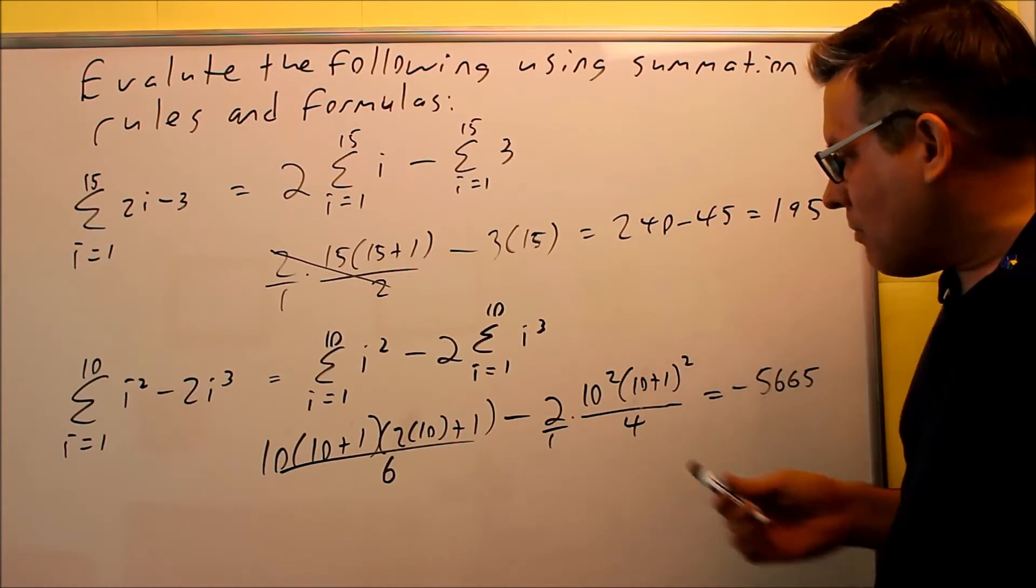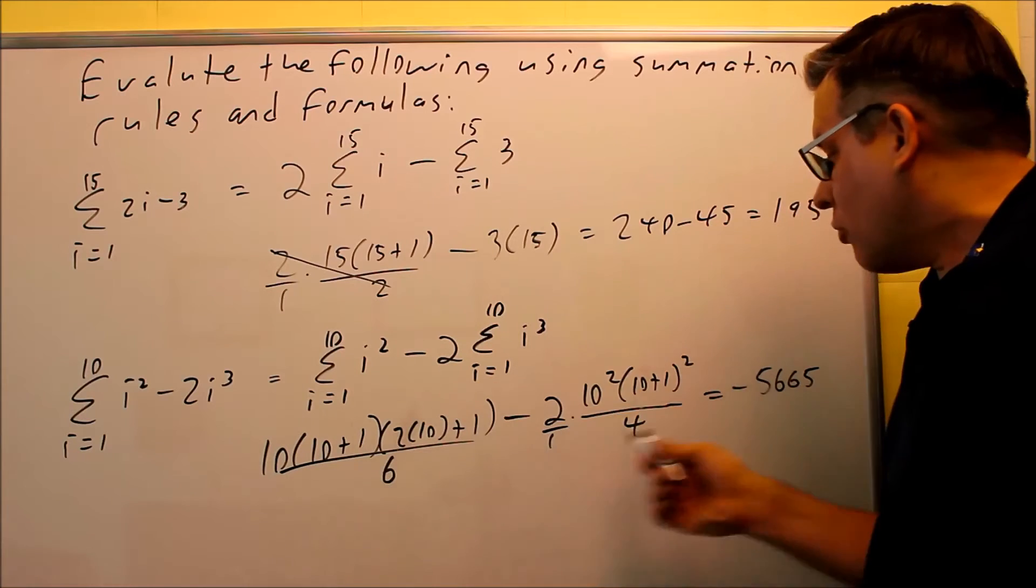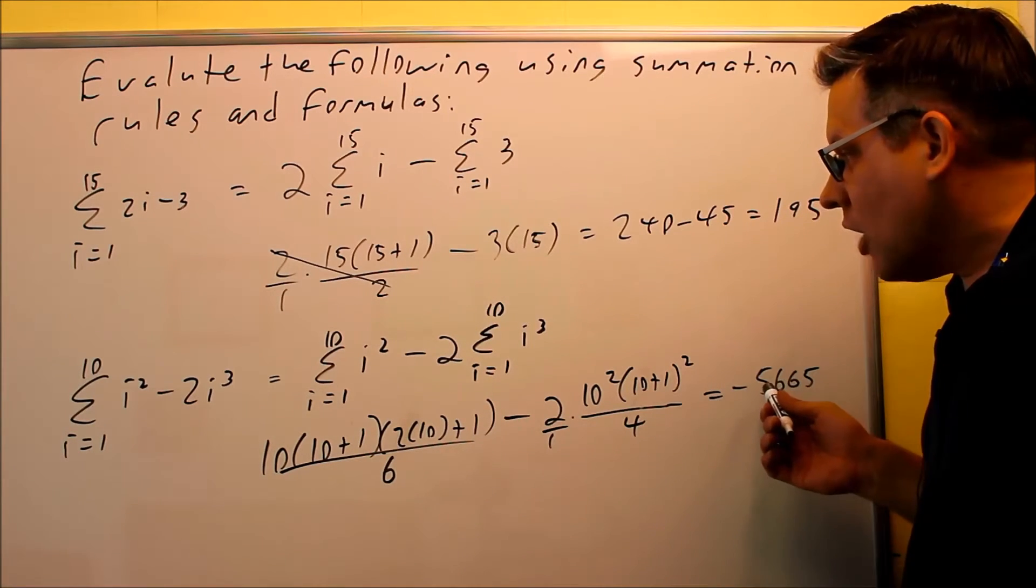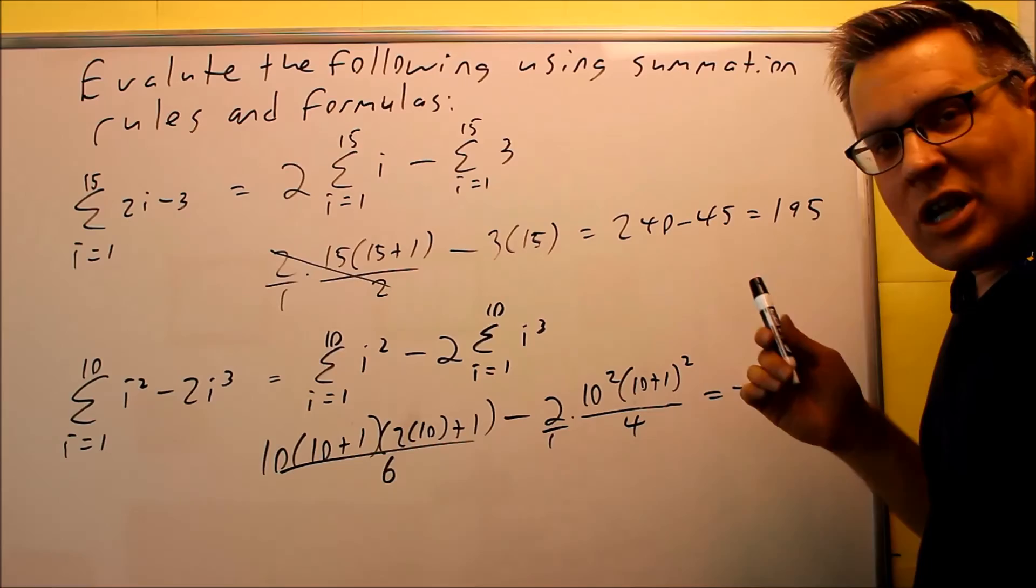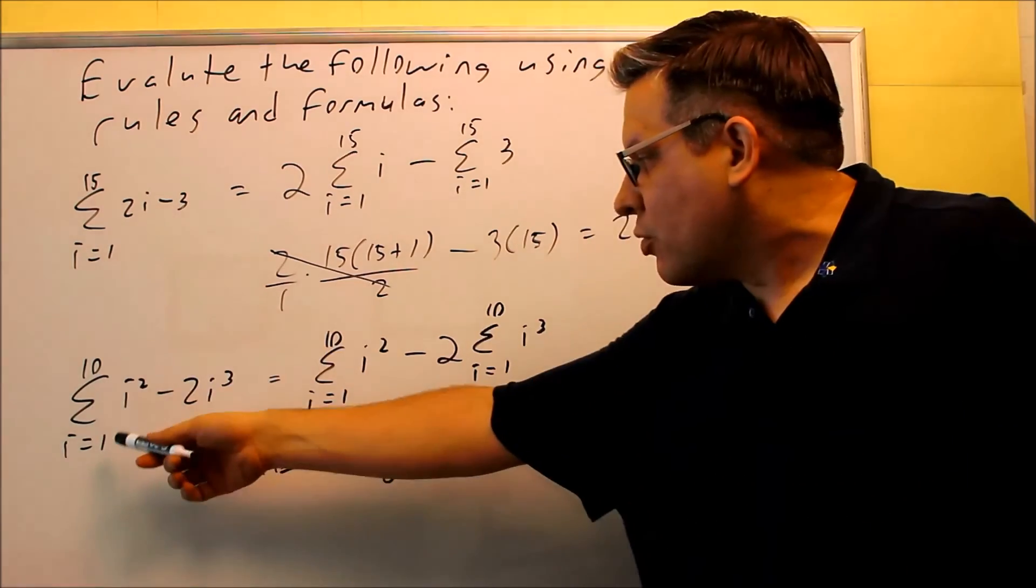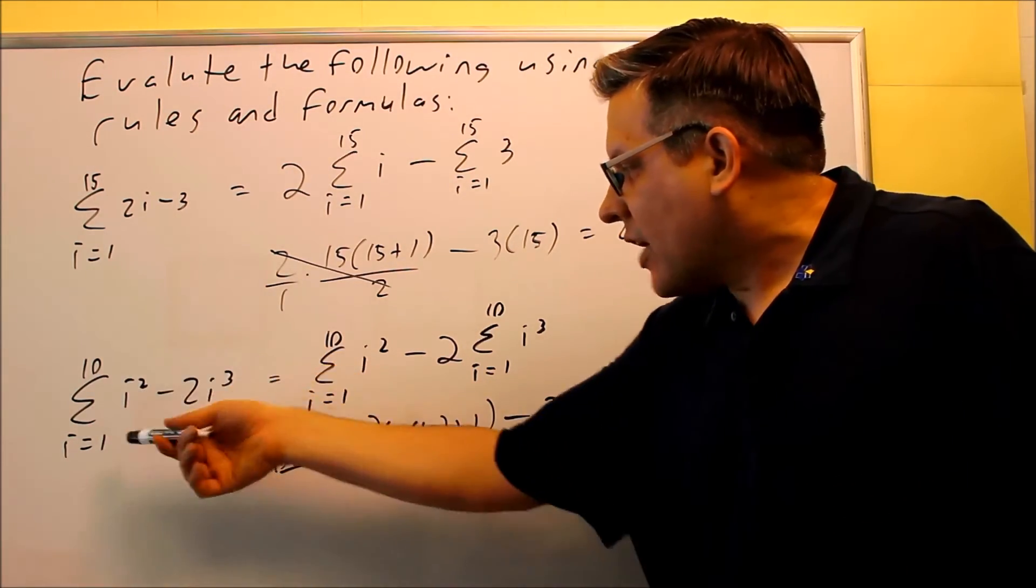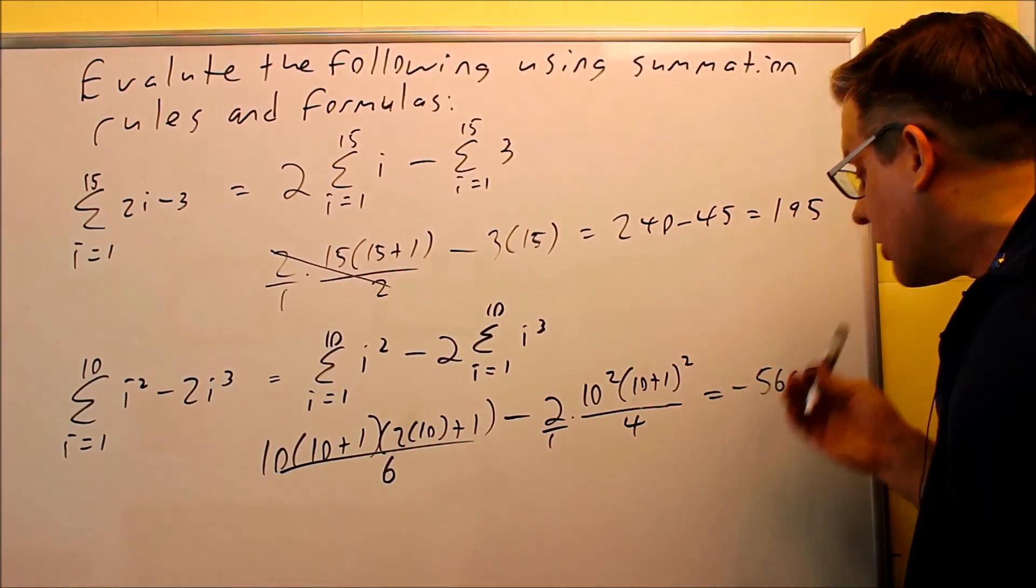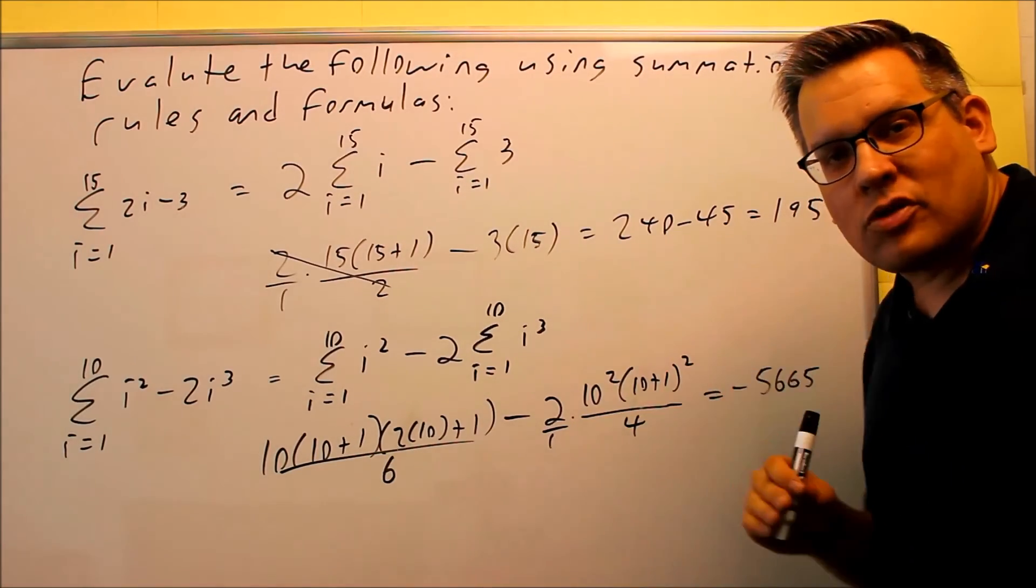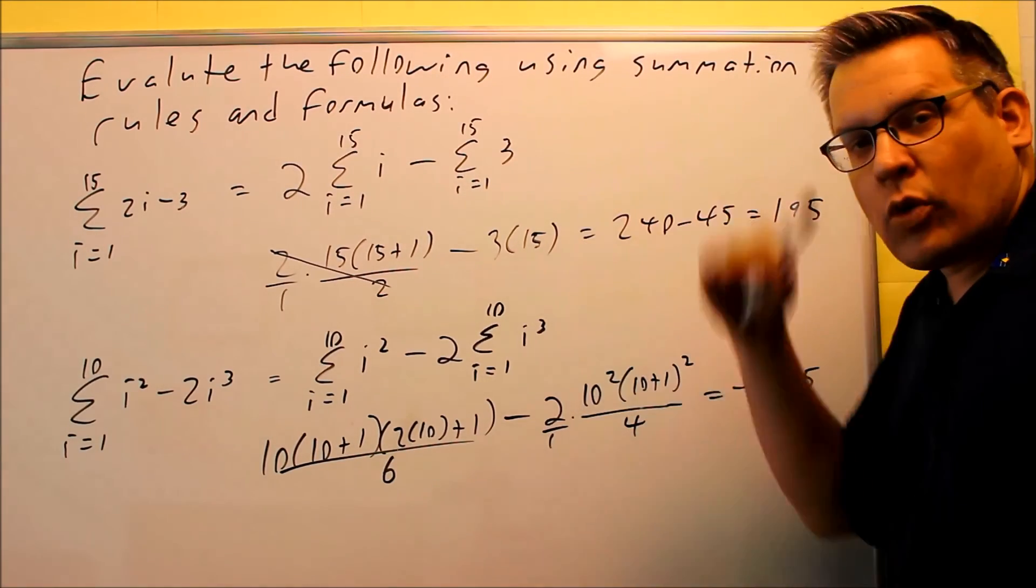It's negative because this part here is smaller than what this part is, and that's why you get a negative number with it. And that would be the same thing if you were to do this 10 times and put one in for both i's and do all that down, you would have gotten exactly the same answer. So again, these formulas allow you to get the answers without writing all those steps out.